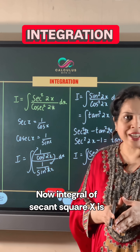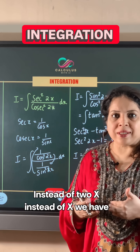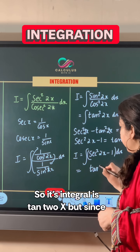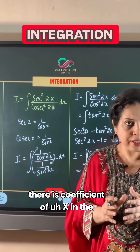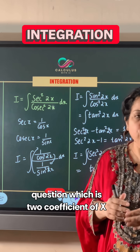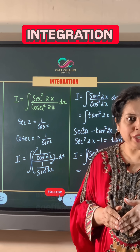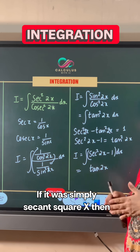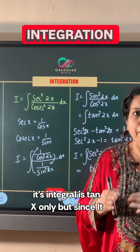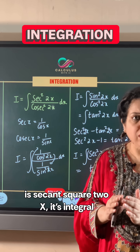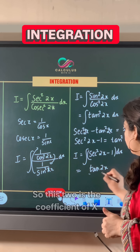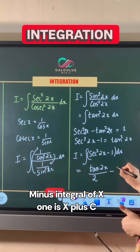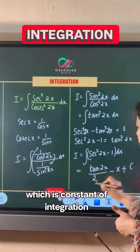The integral of secant squared x is tan x. Since we have 2x instead of x, its integral is tan 2x. But since the coefficient of x is 2, according to the rules of integration, that coefficient comes into the denominator. If it were simply secant squared x, the integral would be tan x, but since it is secant squared 2x, its integral is tan 2x divided by 2. So the result is tan 2x over 2, minus the integral of 1, which is x, plus c, the constant of integration.